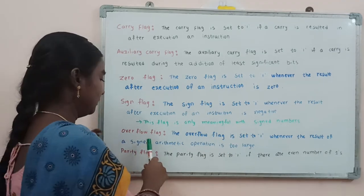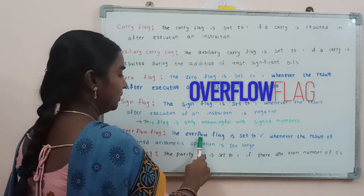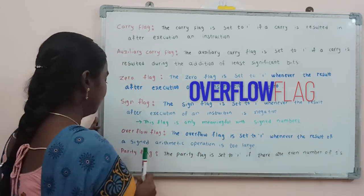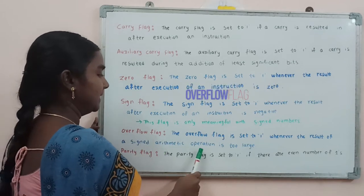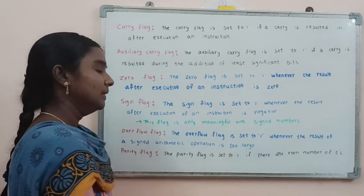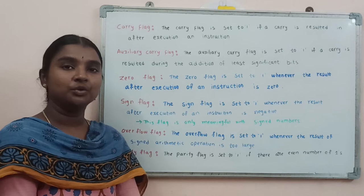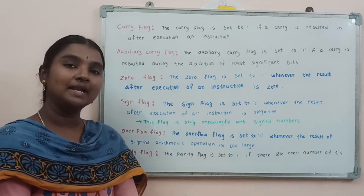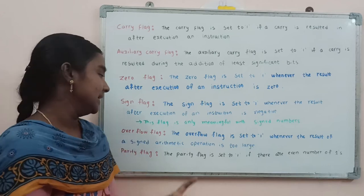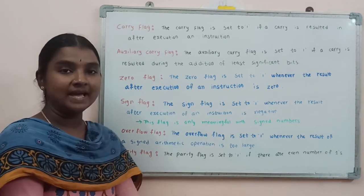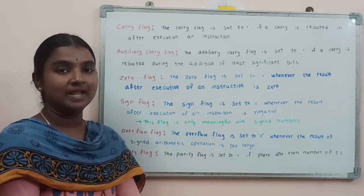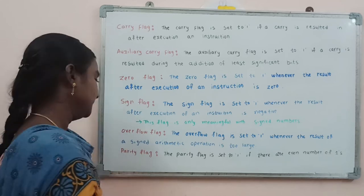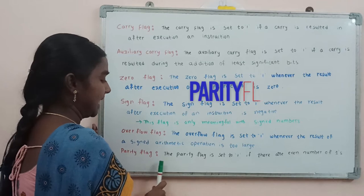The overflow flag is set to 1 whenever the result of a signed arithmetic operation is too large. For example, if we are doing addition and the result exceeds the representable range, this overflow flag is going to be set to 1. Otherwise this flag is set to 0.